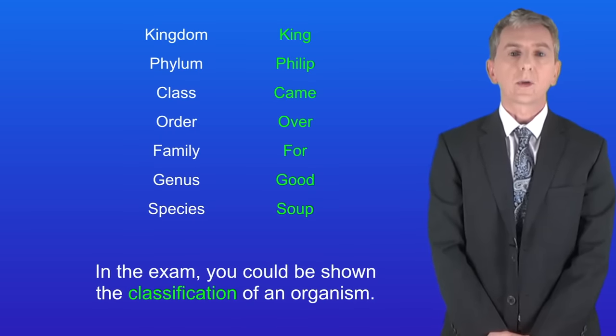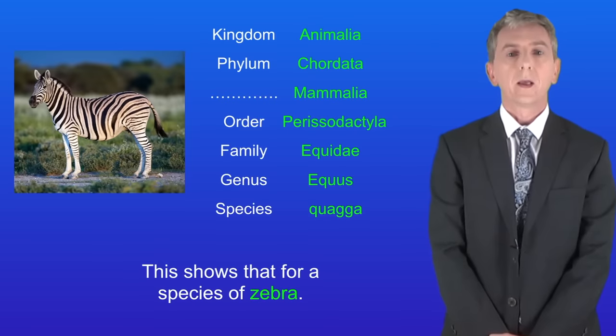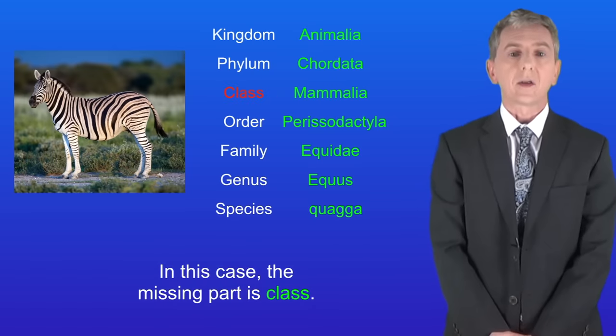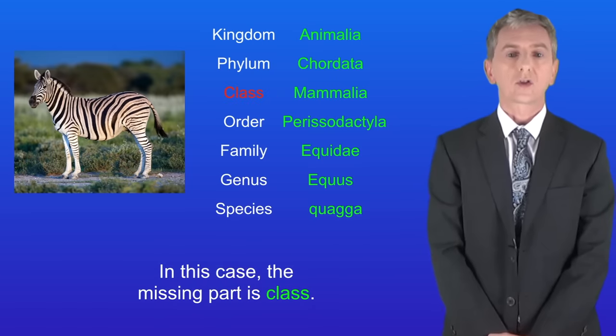Now in the exam you could be shown the classification of an organism. So I'm showing you that here for a species of zebra. In the exam question they might miss out part of the classification and ask you to fill it in. So in this case the missing part is class and I'm showing you that here.